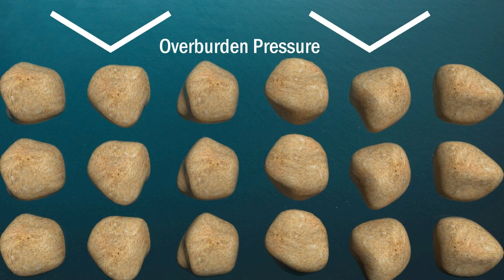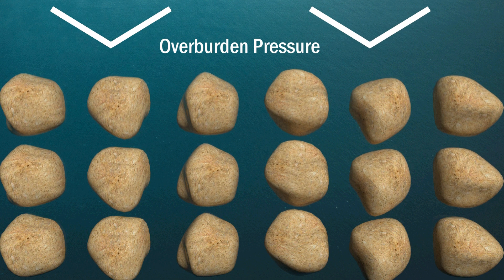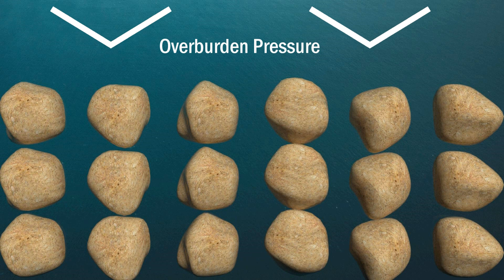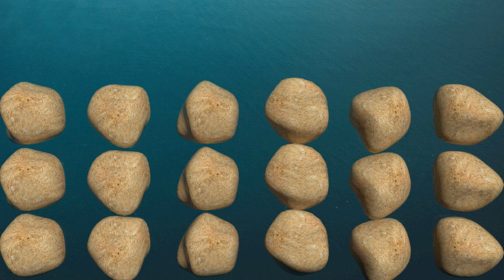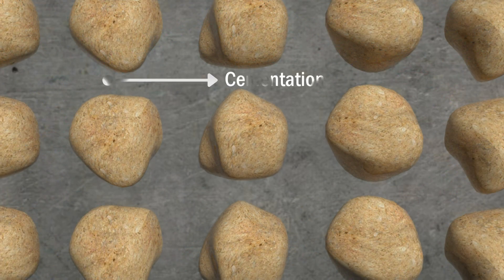Number two: compaction. As overburden pressure above the formation increases, the grains are compacted closer to each other, causing a reduction in porosity. Number three: cementation. It represents the material binding the grains together; as cementation increases, it plugs the pores between grains, causing a further reduction in porosity.